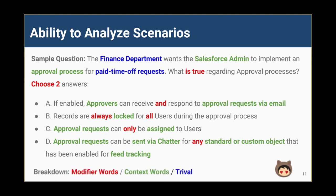Modifier words are in red. The question makes it clear that we only want answers that are true and we need to select at least two answers. Watch out for conjunctions like 'and' that change the meaning of the sentence. In answer A, are we positive that approvers can receive and respond to approval requests via email? Also watch out for absolutes like 'always,' 'never,' 'all,' and 'none.' Answer B is a good example and uses 'always' and 'all' — are we positive that the record is always locked for all users? Be on the lookout for words that limit and delimit such as 'any' and 'only,' as seen in answers C and D. In answer C, are we positive that only users can be assigned approval requests? And in answer D, is Chatter really an option for any standard or custom object?